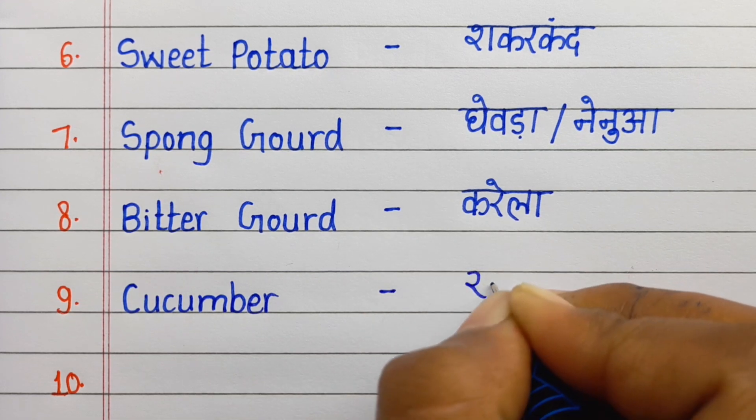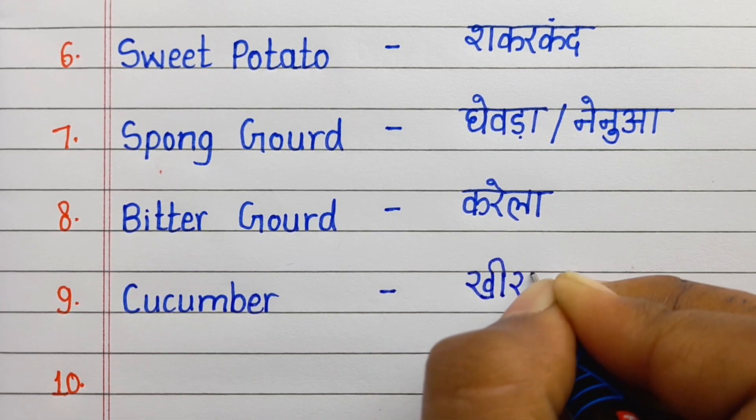Number nine: Cucumber. Cucumber means kheera.